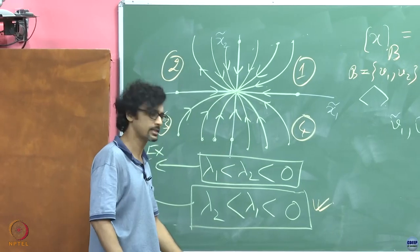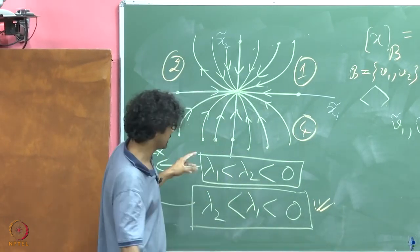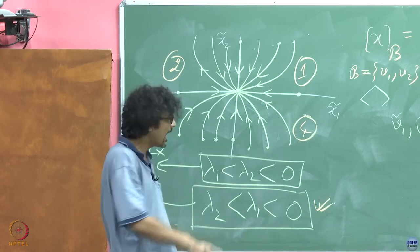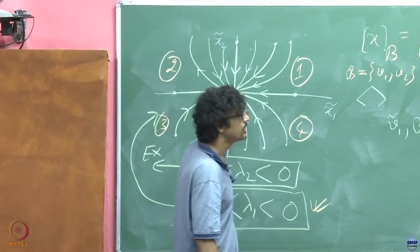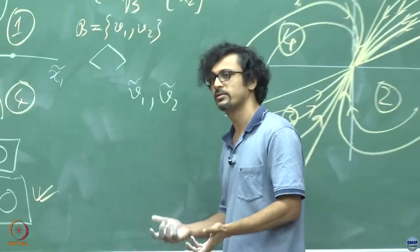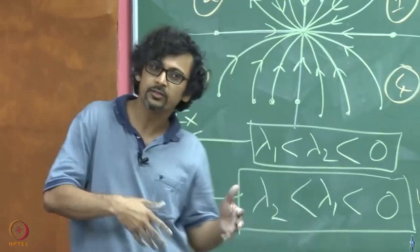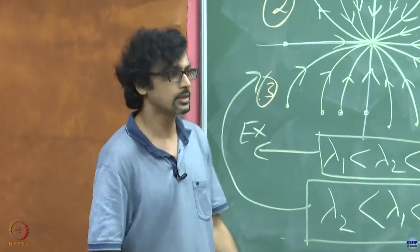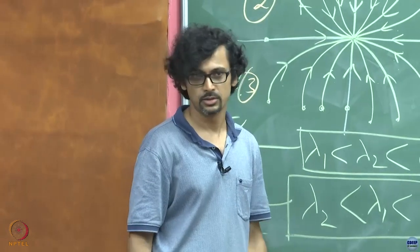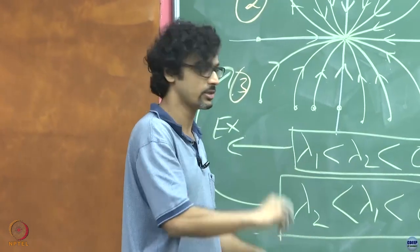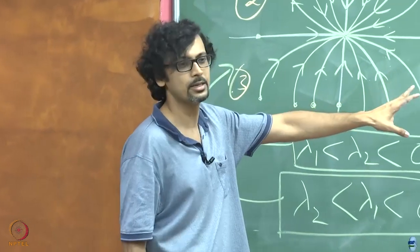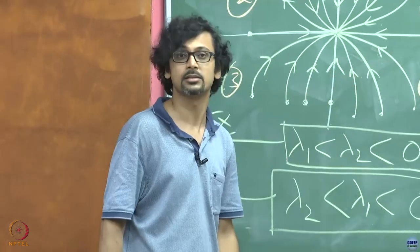In the next lecture we will quickly wrap up with the other cases: when both lambdas are positive — called an unstable node — and when one is positive and one is negative — called a saddle point. The case we have drawn here, both negative, is called a stable node. Those are the three kinds of phase portraits when the lambdas are real. Then we move into other interesting topics on eigenvalues and eigenvectors, starting with their formal definitions.